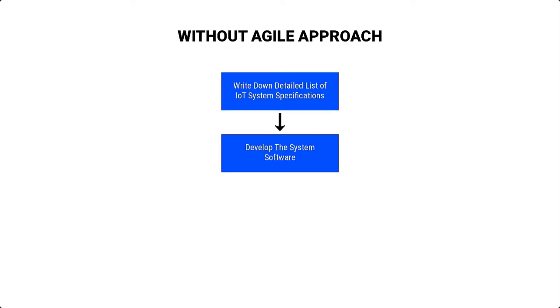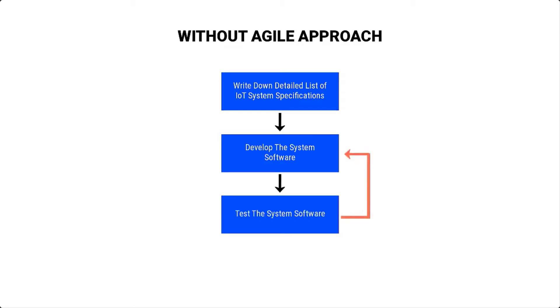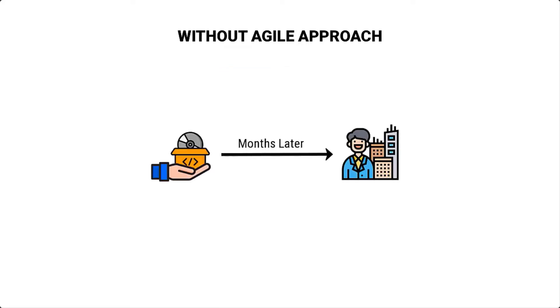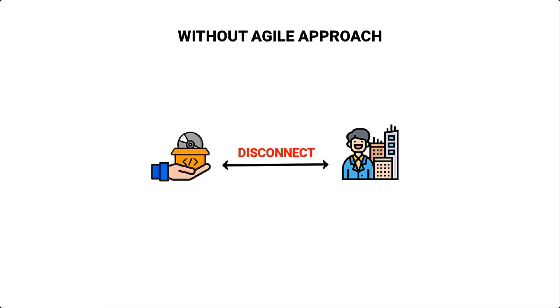You would then start doing the development work, do all the testing, find bugs, and go back to development work. And then months later, you ship the software to the customer. A major disadvantage of approaching your IoT software development in this manner is that you create a disconnect between who you are building the system for and whether or not you are building the right thing. For example, you could spend weeks working on a feature that the customer no longer needs. So let's explore how an Agile approach addresses these challenges.